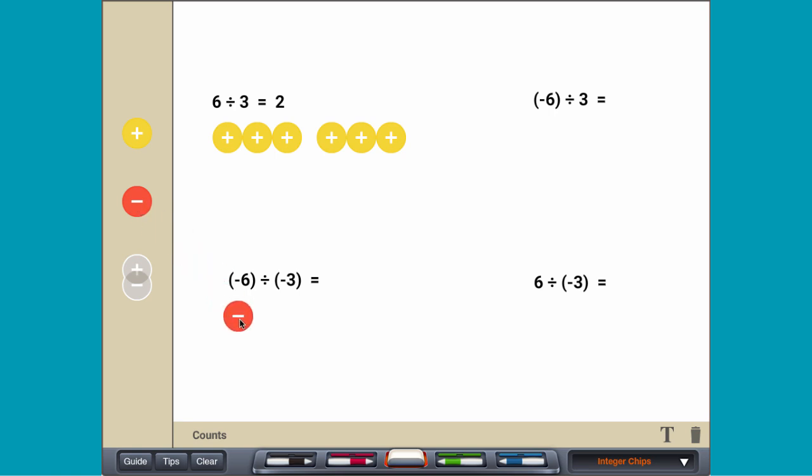Dividing negative 6 divided by negative 3 is like counting how many groups of negative 3 can be made from negative 6.